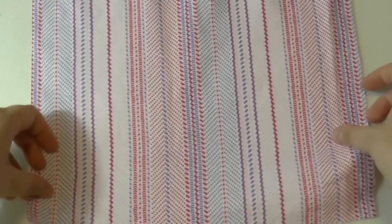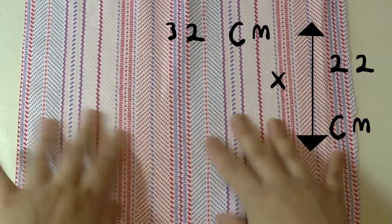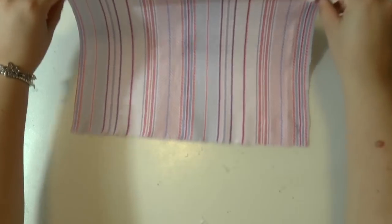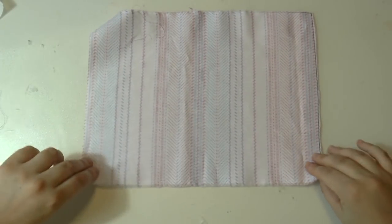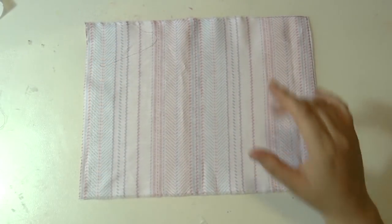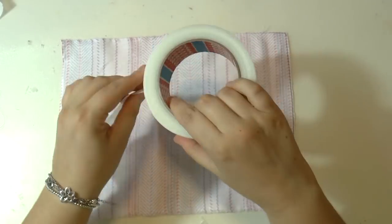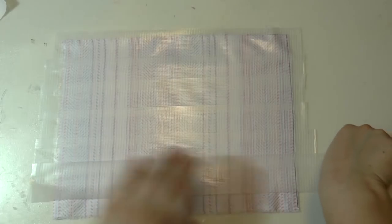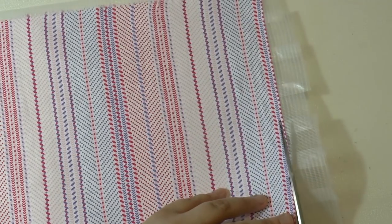For the second design you want to take another piece of fabric, same measurement as the other one, and flip it upside down and cover with some duct tape. And then trim the excess with your scissors exactly as we did before.